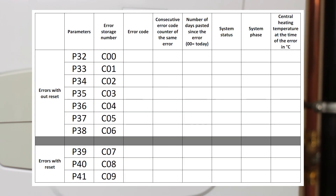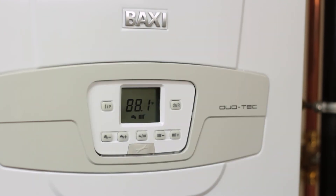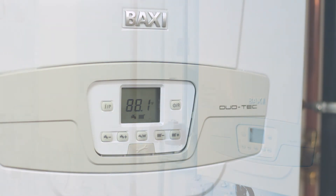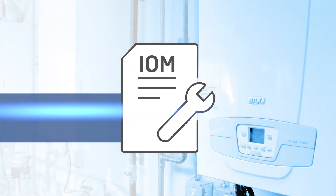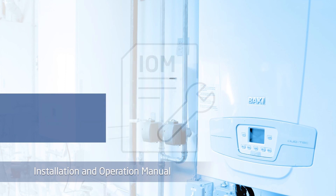In the service manual, there is a page you can print listing the parameter numbers and error code number descriptions so that you can log the numbers as they flash. You can also write them down in your own log to reference later. If you have any other questions, please refer to your installation and user manual that comes in the box.